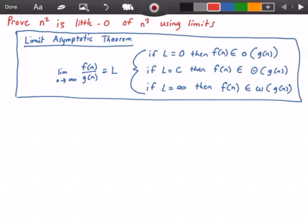And if L is equal to c, where c is some constant value, then our function f(n) belongs to big theta of g(n). And if our limit L is equal to infinity, then our function f(n) belongs to little omega of g(n).